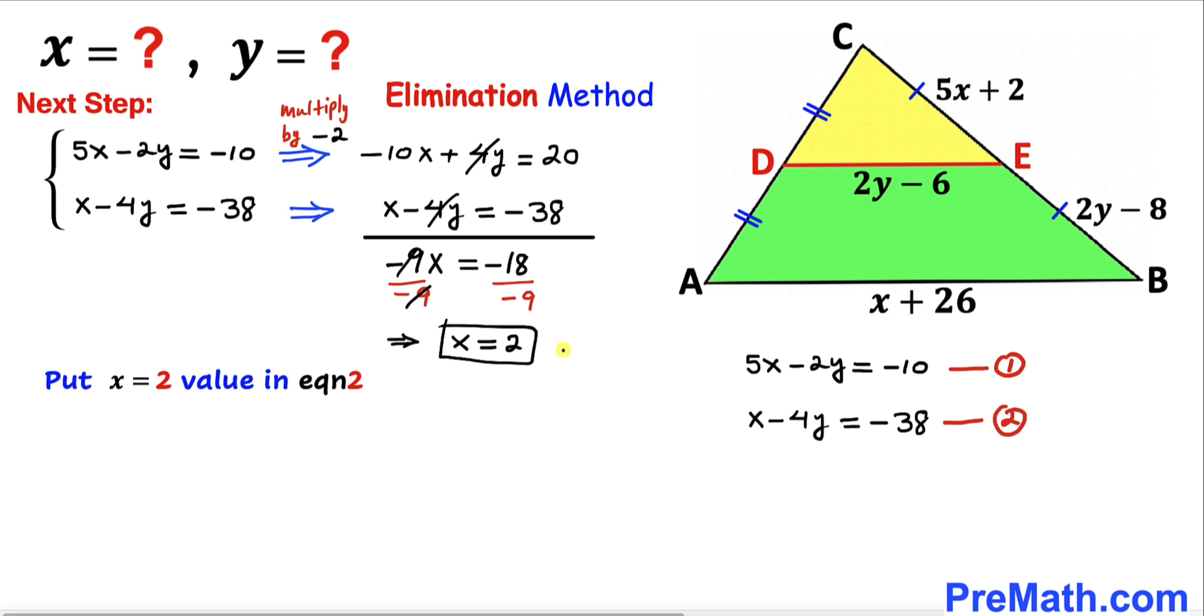Now we're going to plug in x equals 2 into equation 2. Here's our equation 2. Let's replace the x value with 2. So we get 2 minus 4y equals negative 38.